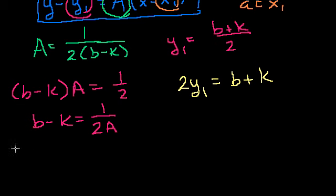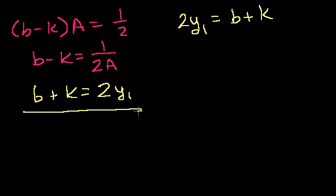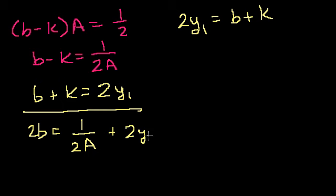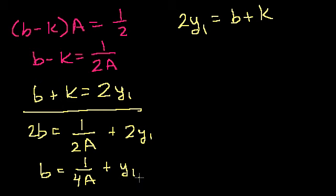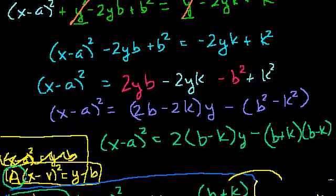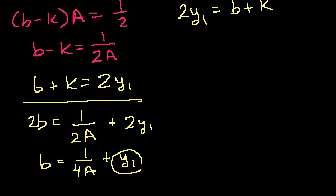Multiplying the second equation by 2 gives b plus k equals 2y1. Adding the two equations, the k's cancel: 2b equals 1 over (2A) plus 2y1. Dividing by 2, b — the y-coordinate of our focus — equals 1 over (4A) plus y1. This tells us we take the y-coordinate of the vertex and add 1 over (4A) to it, which matches what we found before.